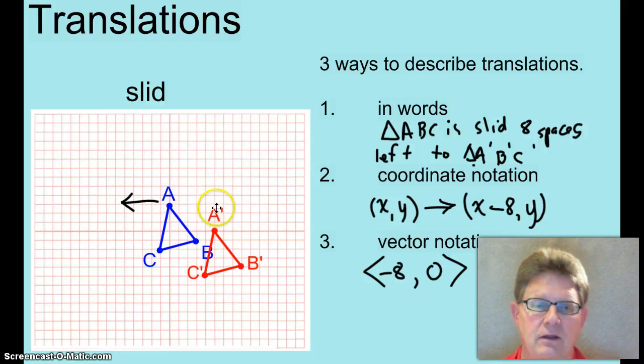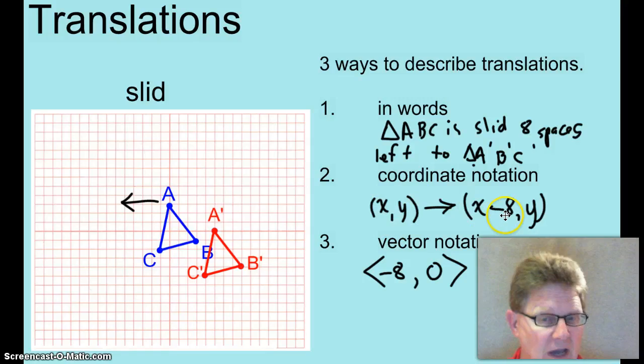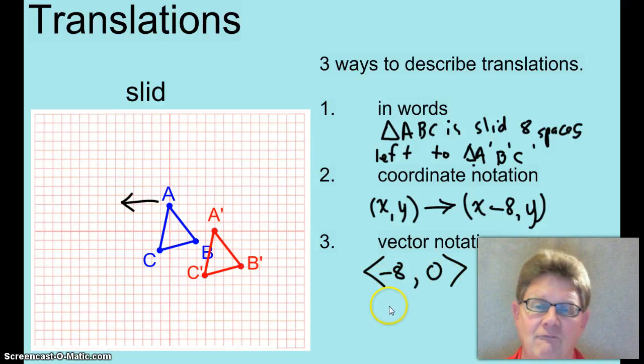Five to the right, and three down. And your coordinate notation: (x,y) is paired with (x plus 5, y minus 3), because it went to the right five and down three. And your vector notation would be 5, negative 3 in hard parentheses.